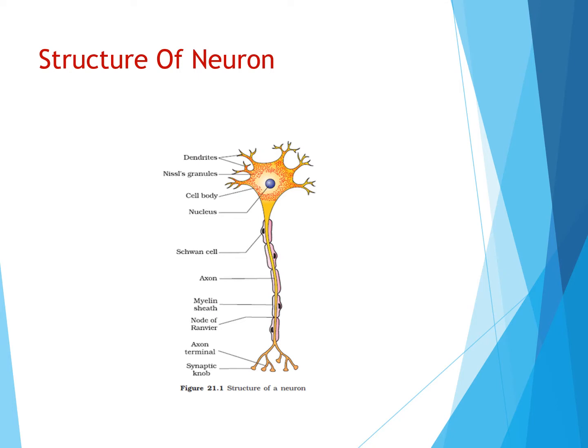To begin with, let us try to understand the structure of a neuron or a nerve cell. A neuron or a nerve cell consists of a cellular body and its extensions — dendrites, which are multiple in number, and a single axon.